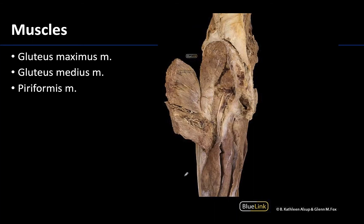Once you get the gluteus maximus reflected, you can see that there's quite a bit going on just deep to that large muscle. You can see here just how thick the gluteus maximus is — it's not a particularly long muscle compared to some others in the lower limb, but its thickness is something that's difficult to appreciate without seeing it. With it reflected, you can see the entirety of the superficial side of the gluteus medius. This is also a thick muscle — certainly smaller than the gluteus maximus, as its name suggests — but still rather thick and very fan-shaped.